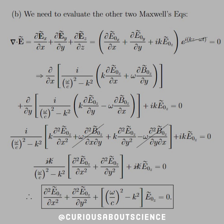We send the derivative inside the parentheses — everything else is constant so we push it through. The factor i/ω divided by (ω²/c² − k²) appears in both the x and y partials. We get second-order partials in x, mixed partials in x and y, and second-order partials in y — the mixed partials cancel by Clairaut's theorem. Then we factor out i·k from the remaining terms; they cancel, and dividing through isolates the coupled differential equation entirely in terms of Ez.